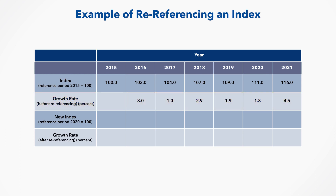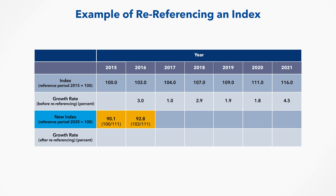To change the reference period of the index to 2020, we divide each observation in the original index series by 111, the value of the index in 2020, then multiply by 100. For example, the new value for 2016 is the old value, 103, divided by 111 times 100, which equals 92.8.